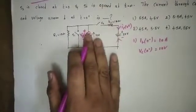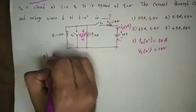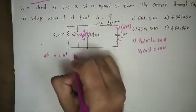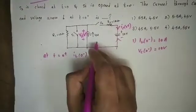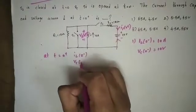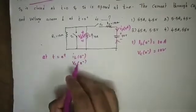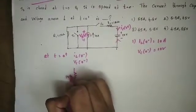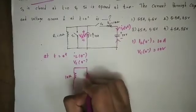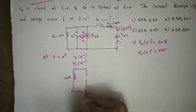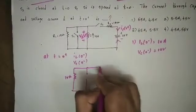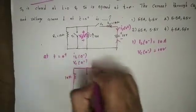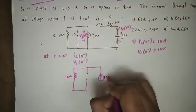At t = 0, the circuit requires iL(0) and vC(0). We replace the circuit: the resistor is 10 ohms. The switch is open. We replace the inductor with a 10A current source.